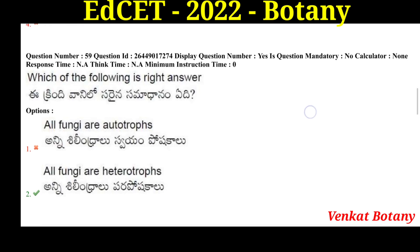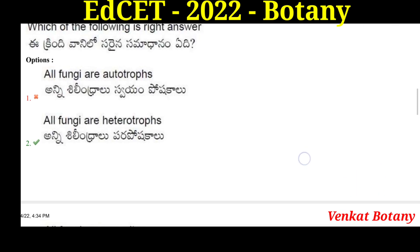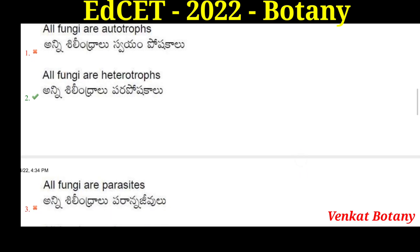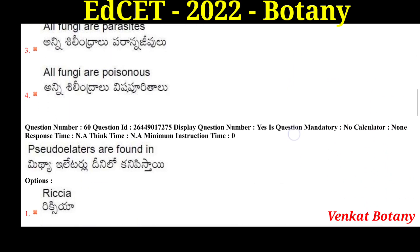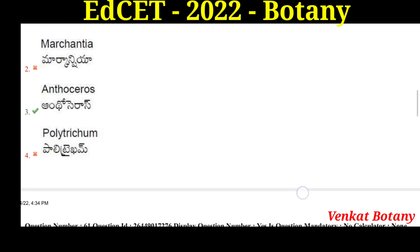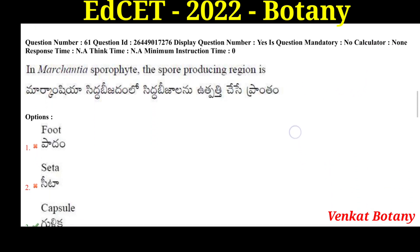Which of the following is correct? All fungi are heterotrophs — that is the correct answer. Pseudo elaters are found in Anthoceros. Anthoceros is classified under Anthoceratopsida. Marchantia has elaters.